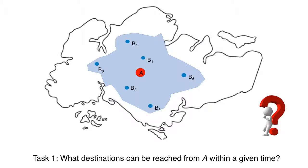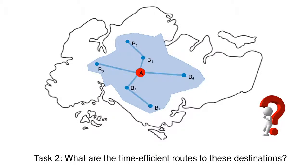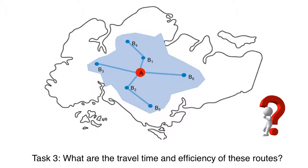Task 1: What destinations can be reached from A within a given time? Task 2: What are the time-efficient routes to these destinations? Task 3: What are the travel time and efficiency of these routes?